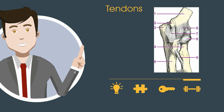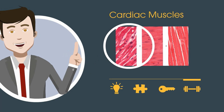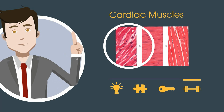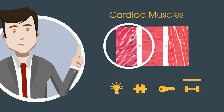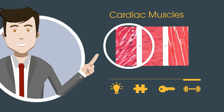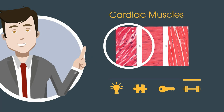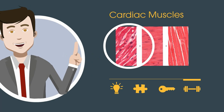Cardiac muscles are striated muscles found in the heart. They are kind of a mixture between smooth and skeletal muscles, and these muscles help the heart pump blood all day.